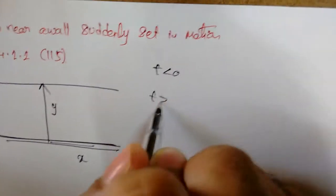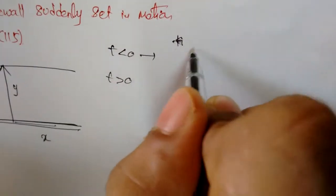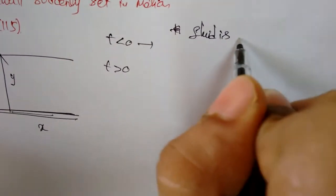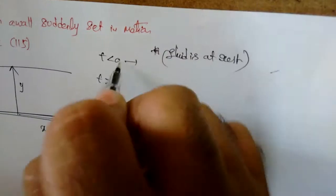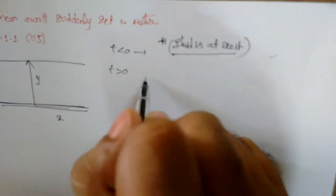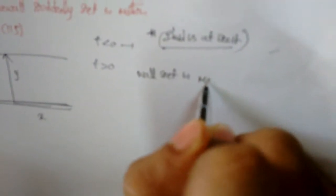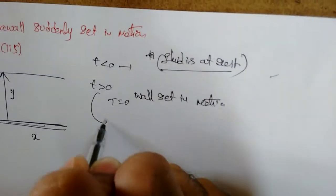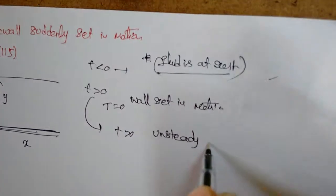We consider three conditions. When t less than zero, flow has not started — flow is at rest. At t equal to zero, the wall is set in motion. For t greater than zero, this is called unsteady state motion.